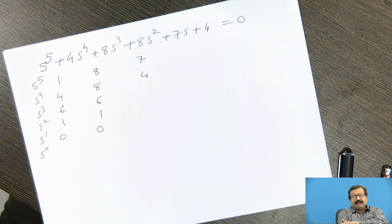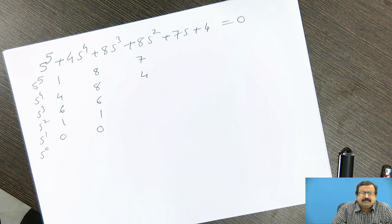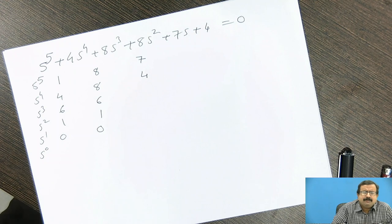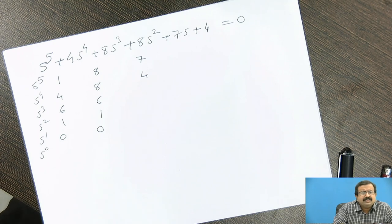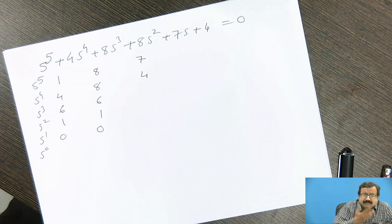Now we are taking a different problem — a fifth-order polynomial. If asked whether the problem satisfies both necessary conditions, we can say yes: it is a fifth-order polynomial, all the terms from degree 5, 4, 3, 2, 1, 0 are present and all the coefficients have the same sign. So it satisfies the necessary condition. For the sufficient condition, we have to prepare a table and see whether Type 1 difficulty arises or not.